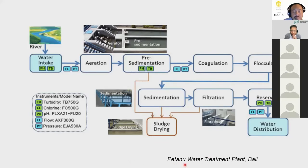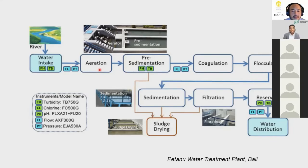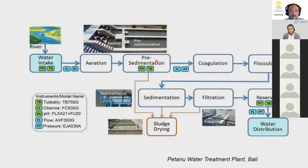An example treatment plant diagram from Petanu Water Treatment Plant in Bali is shown. It includes aeration — used to remove ammonia, nitrogen, or for groundwater treatment to oxidize ferrous iron (Fe²⁺) to ferric (Fe³⁺) — followed by pre-sedimentation if necessary, coagulation and flocculation, sedimentation, filtration, carbon reservoir, and distribution, with sludge taken to a sludge processing system.